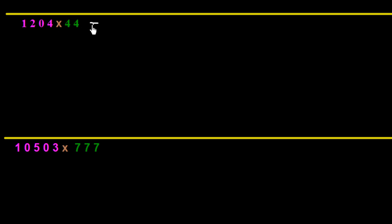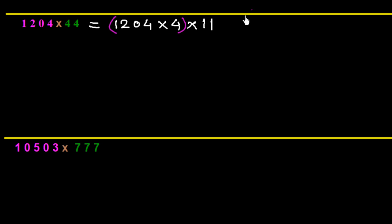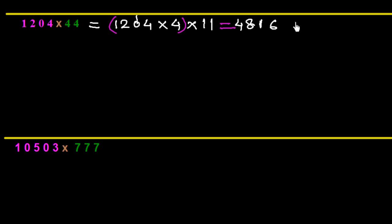For 1204 × 44, we factorize 44 into 4 × 11, so we write 1204 × 4 × 11. Multiplying 1204 × 4: 4×4=16, write 6 carry 1; 4×0=0, plus 1=1; 4×2=8; 4×1=4. So 1204 × 4 = 4816. Now we multiply 4816 × 11.